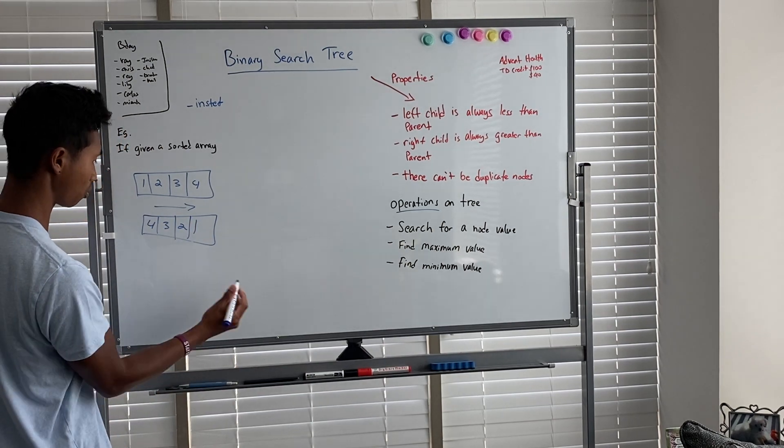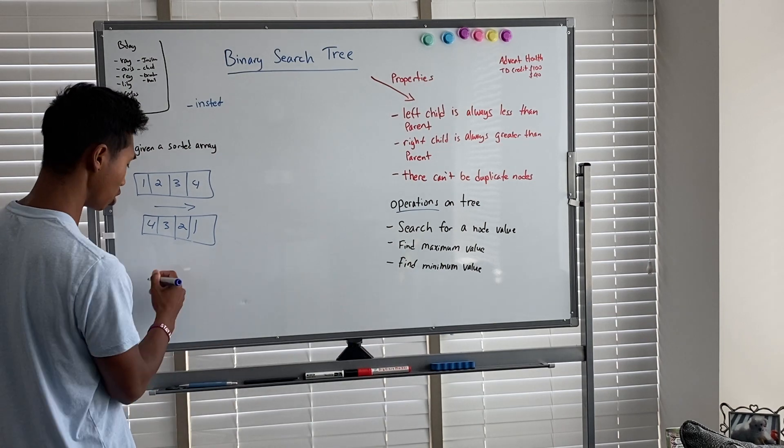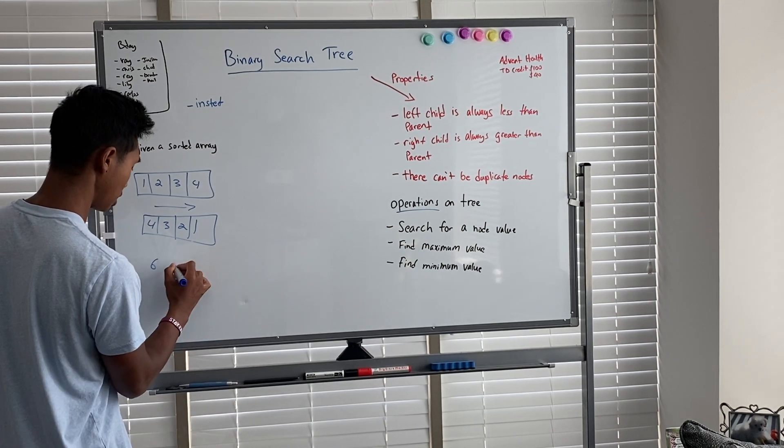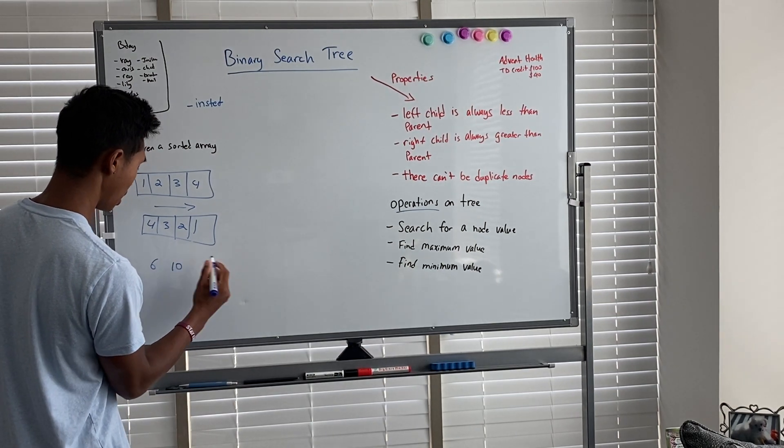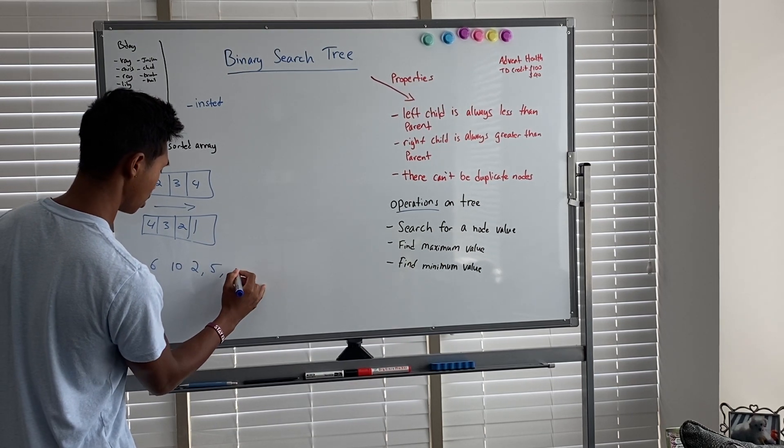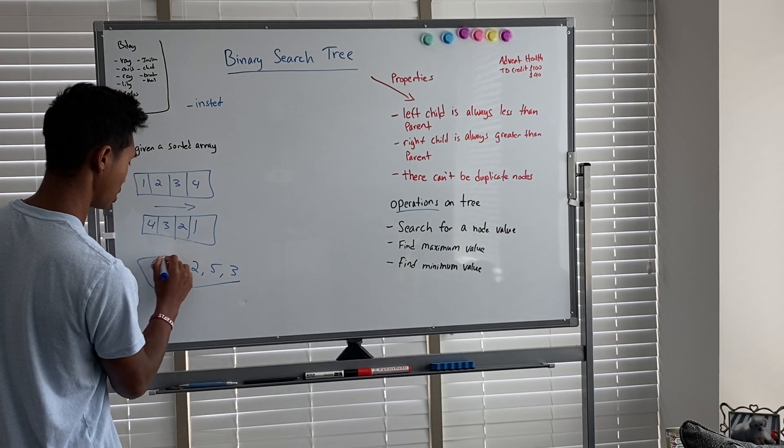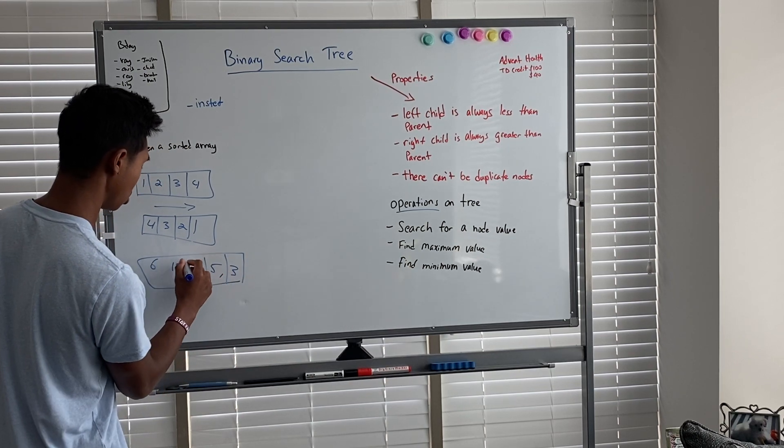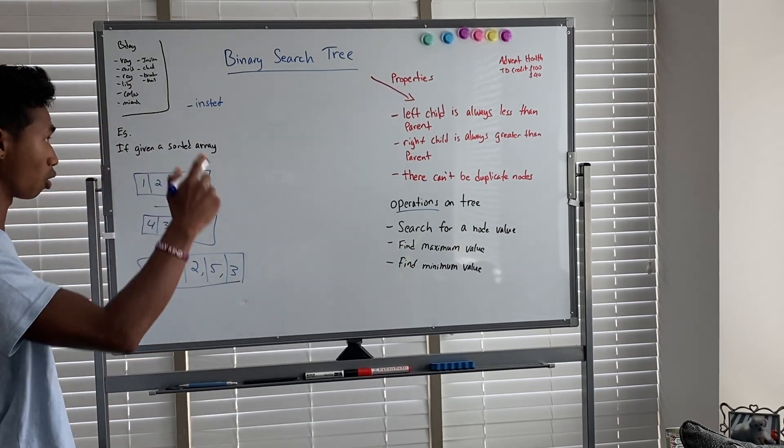And then the third one we're going to look at is an array that's out of order. So we can say like six, ten, two, five, three. Okay, so these are the three different ones we're going to go over really quick.